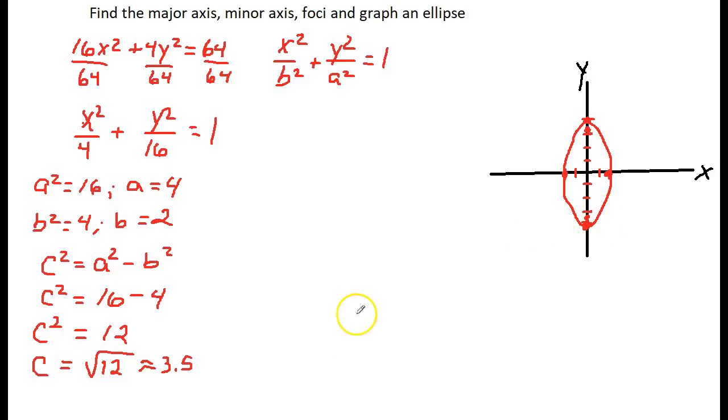All right, so let's get the coordinates of my foci. We'll put both of them on here, they are at 0, comma, plus or minus 3.5.